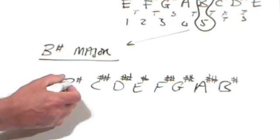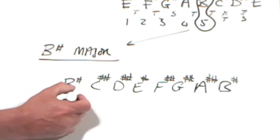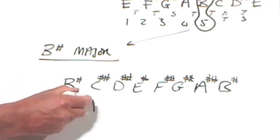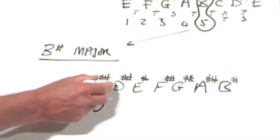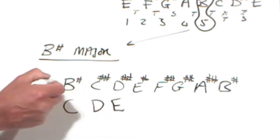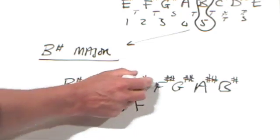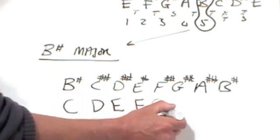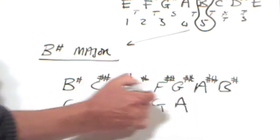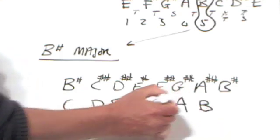So, now we come to what I find the most strangely satisfying part of this whole procedure. Let's look at each of these notes in turn, and think of alternative names for them. So, B sharp sounds the same as C. C double sharp sounds the same as D. D double sharp sounds the same as E. E sharp sounds the same as F. F double sharp sounds the same as G. G double sharp sounds the same as A. A double sharp sounds the same as B.